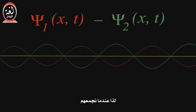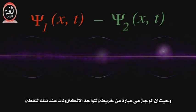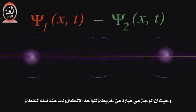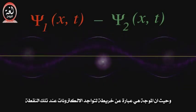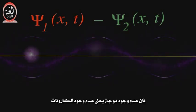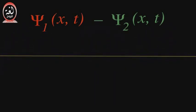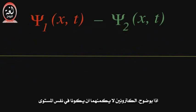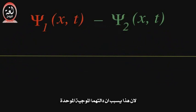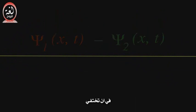So when we combine them, we get no wave at all. And since the wave is a map of electrons existing at that point, no wave means no electrons. So clearly, two electrons can never be in the same state, because that causes their combined wave function to disappear.